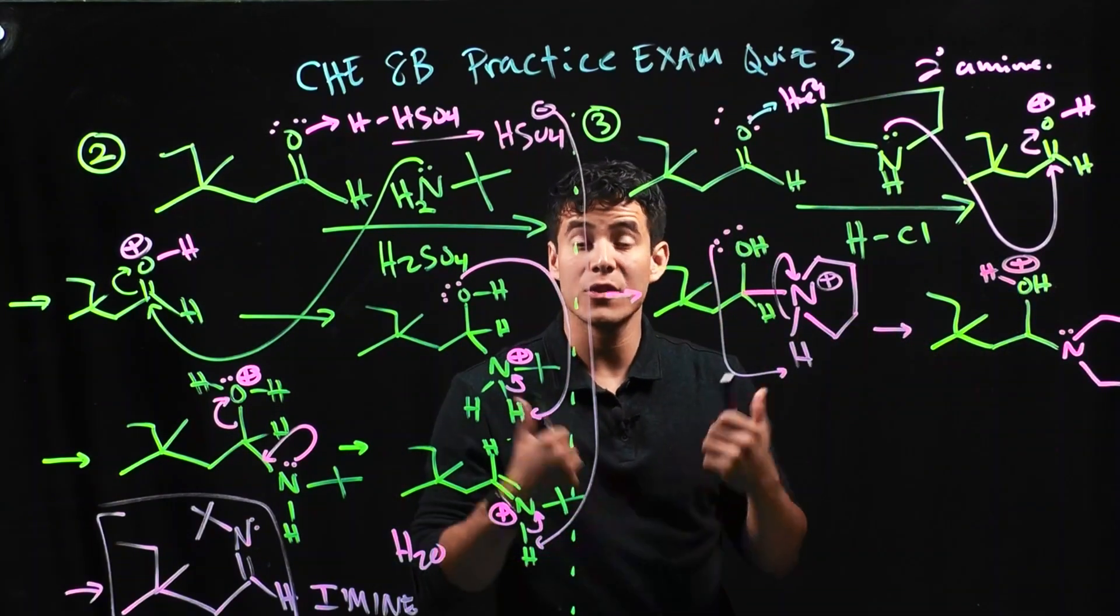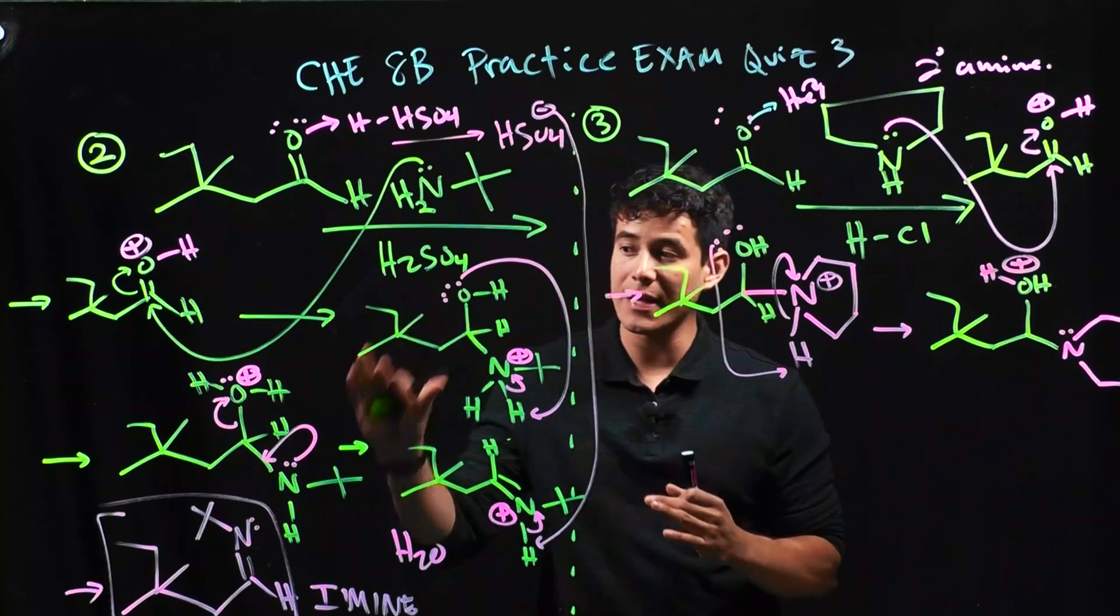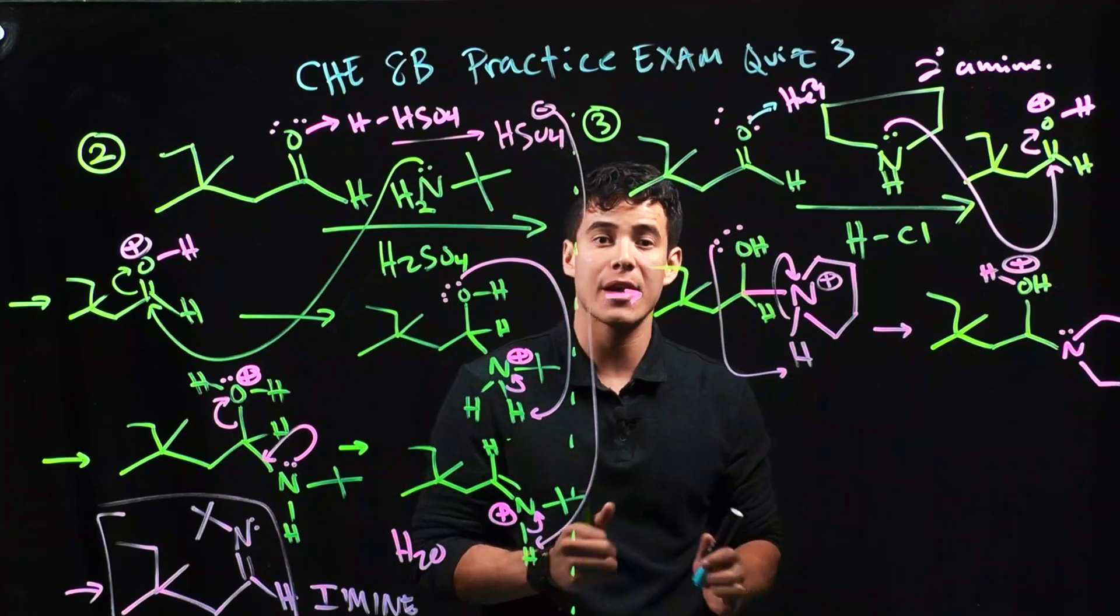Our nitrogen now has its lone pair back, and we have a water group. The water group can get kicked out by the lone pair. Just like the previous mechanism, it's the same exact step so far.